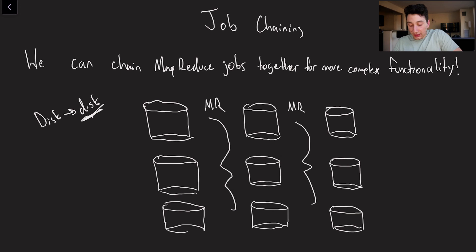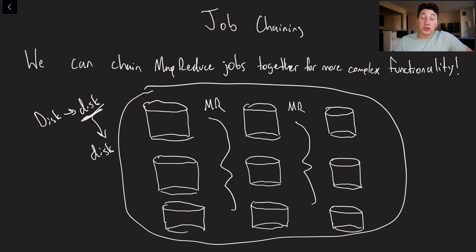And so there's no reason that we can't take this data right here and then do another job where we go from data on disk to data on disk. And that's effectively what we're doing right here. In theory, you can just chain infinite MapReduce jobs together. It might obviously be slow, but it's worth noting that you can do this. And that's what a lot of people will end up doing.